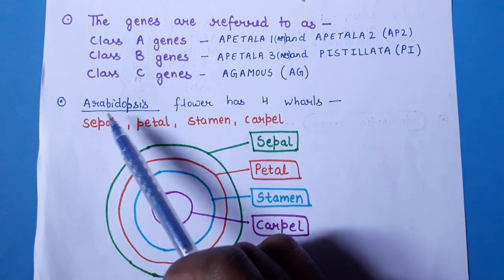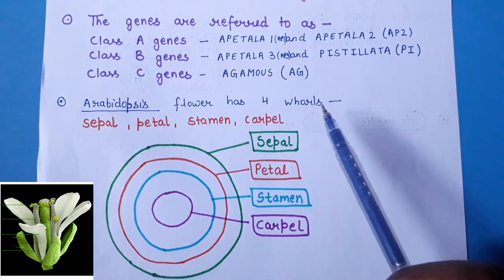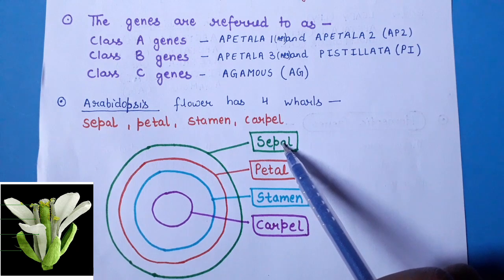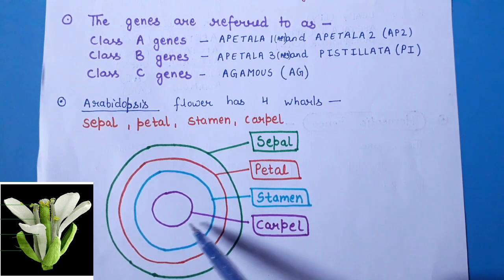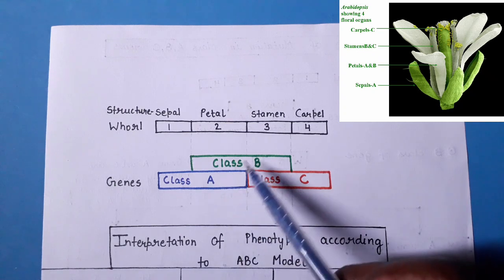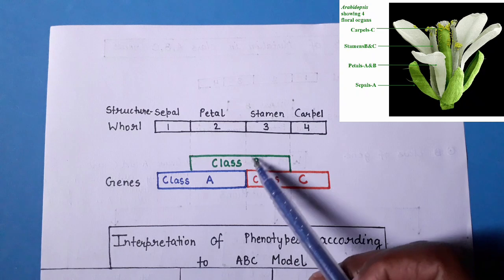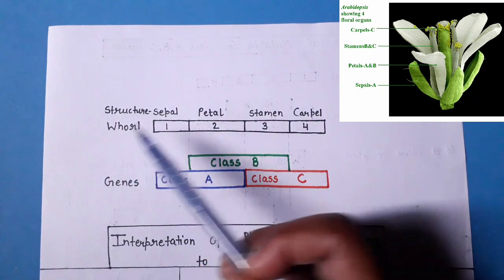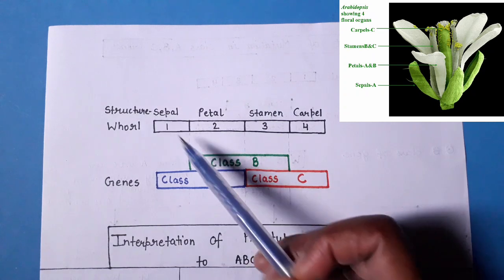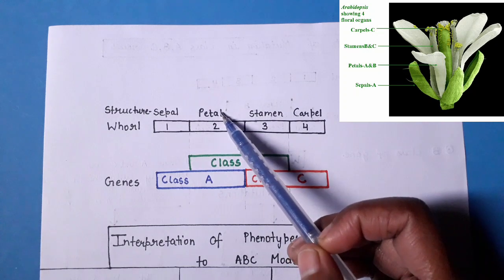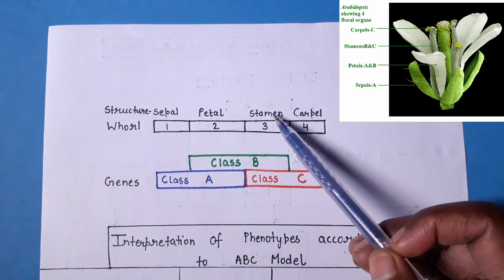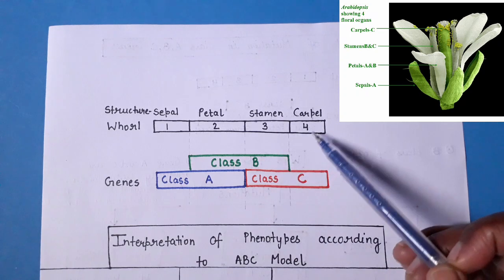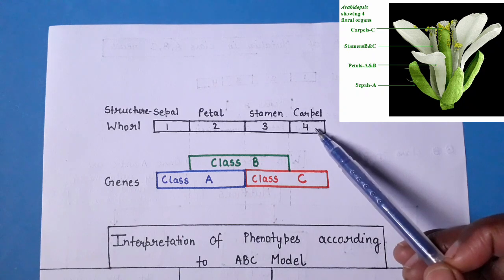In Arabidopsis there are four whorls: the outermost is the calyx (sepals), then the corolla (petals), then the androecium (stamens), and the central whorl is the gynoecium (carpels/pistil). In the ABC model, whorl 1 (sepal) is controlled by Class A genes alone; whorl 2 (petal) by Class A and Class B genes; whorl 3 (stamen) by Class B and Class C genes; and whorl 4 (carpel) by Class C genes alone.